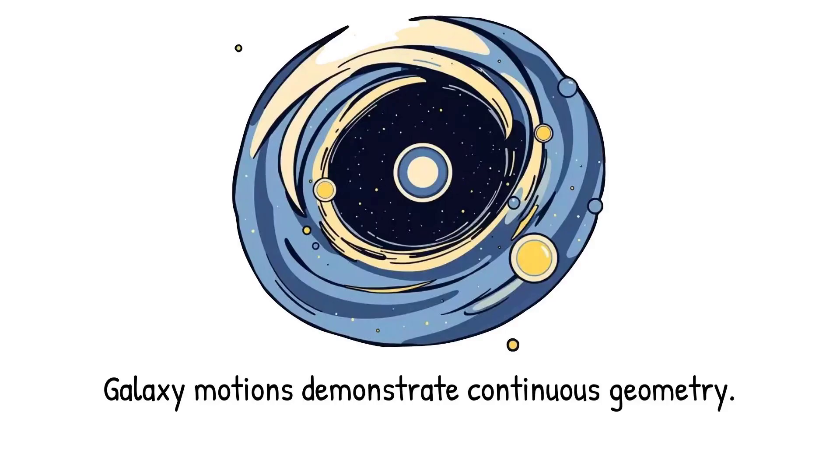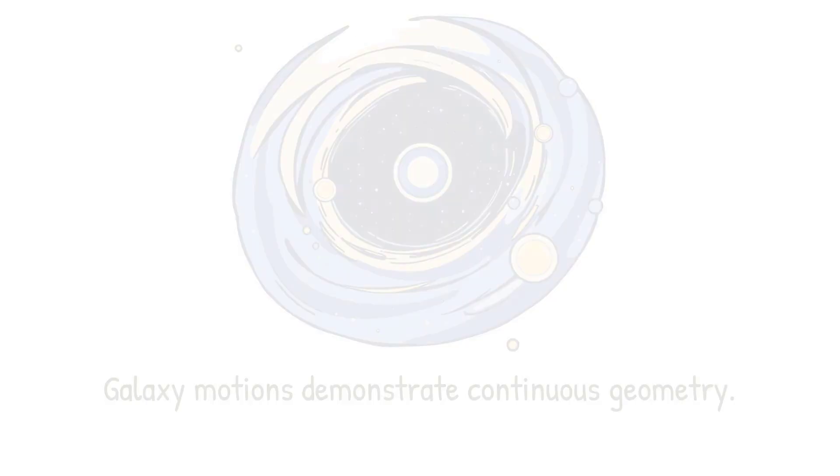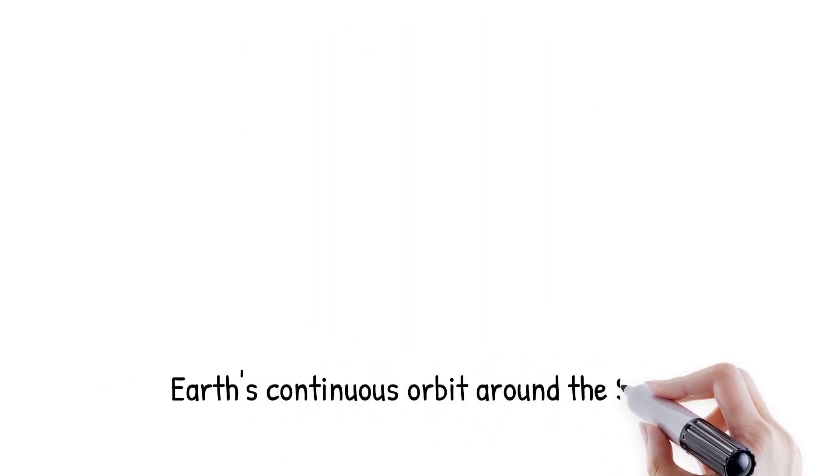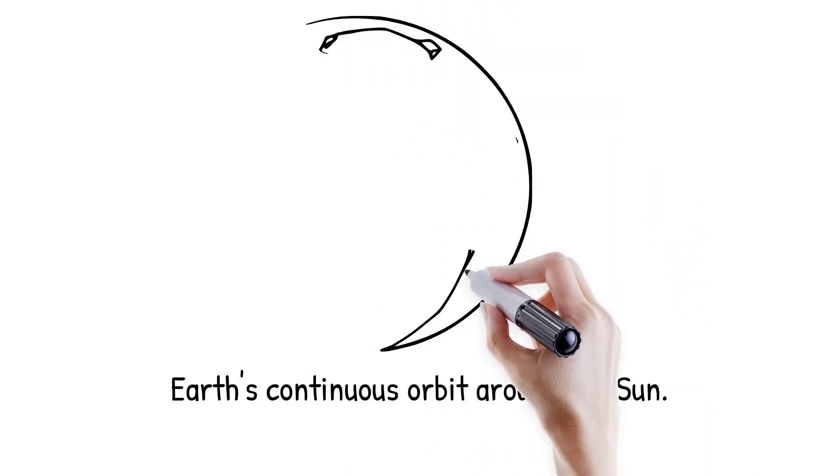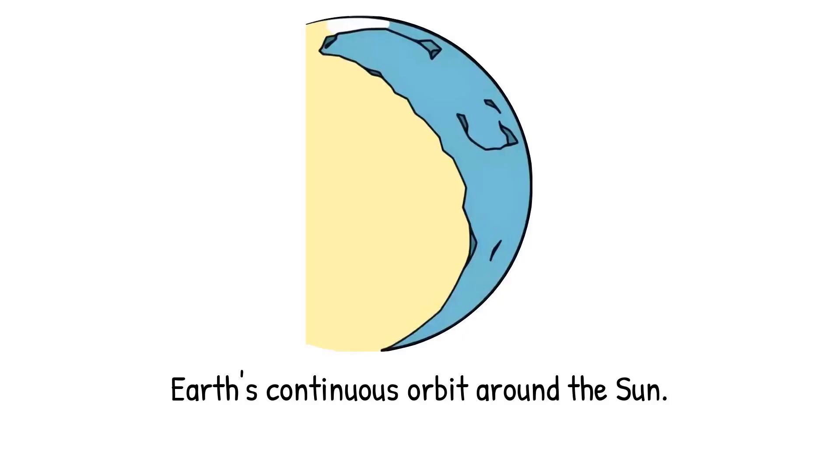The path of Earth around the Sun traces a continuous orbit lasting one year. It is like a vast ocean surface that looks perfectly smooth when seen from high above.